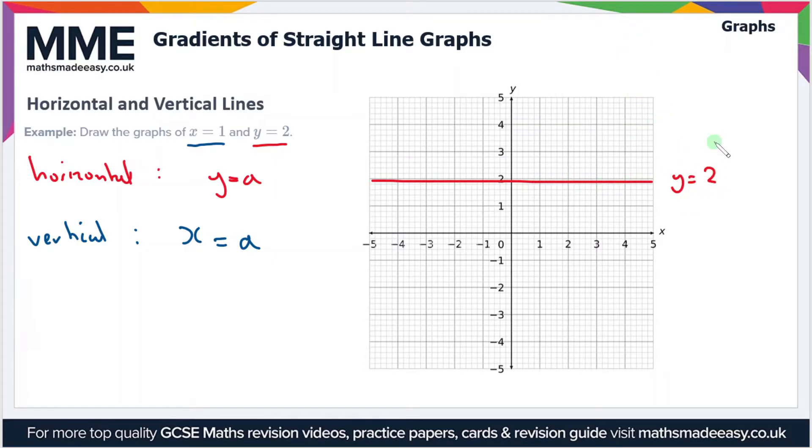Then for the vertical line, which is x equals 1, we do the same thing but this time we go to the x-axis, go to the value of 1, and draw a line that is perpendicular to the axis at that point.